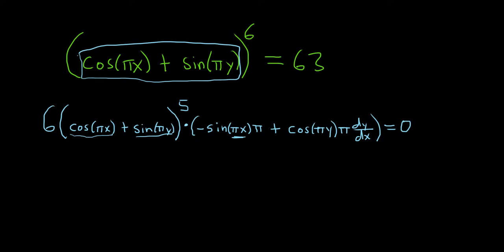Let's go over that one more time. So you take the 6, and you bring it down. We did that here. We leave the inside untouched. We subtract 1, and we get 5. Then we multiply it by the derivative of the inside. The derivative of cosine is negative sine. So you have negative sine times the derivative of the inside. The derivative of πx is π.